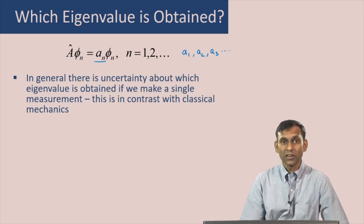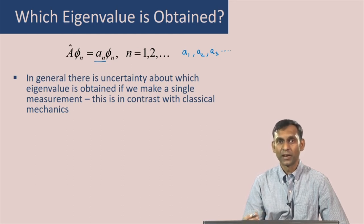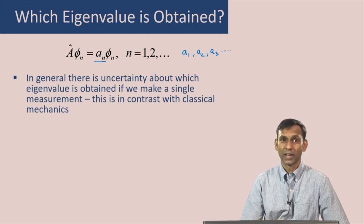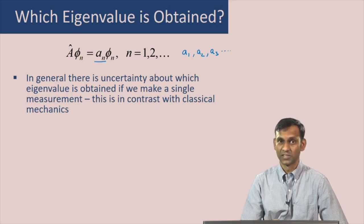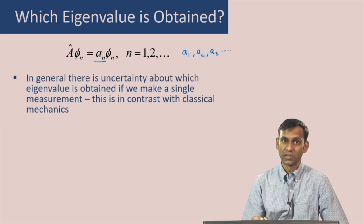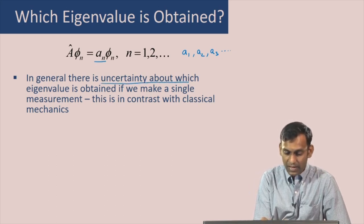This is in contrast with classical mechanics, where if you have multiple replicas of an identical system and you measure a property, you will get the same value on two identical systems. This is different in quantum mechanics, and therefore quantum mechanics is very non-intuitive — even when you have identical systems, you can actually get different eigenvalues when you make a measurement. So there is uncertainty about which eigenvalue is obtained.